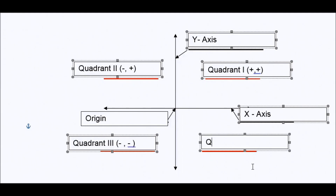Your final quadrant we call quadrant four, and I'm using Roman numerals. Here, your x is actually positive because your numbers are to the right of zero, or the origin. And your y is negative because it's below the origin, below zero.